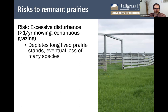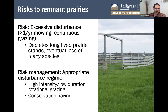Too much disturbance is also a risk. Mowing or haying a prairie more than once a year, or doing continuous grazing, will deplete the stands of long-lived prairie plants, and eventually many or most species will be lost. A lot of cemetery prairies and roadside remnants have been mowed to death, and a lot of pastures that were once prairie have been grazed out. This risk can be avoided by moderating the grazing, haying, or mowing — for example, high-intensity, low-duration rotational grazing and conservation haying are both compatible with biodiversity conservation. The main idea is to limit disturbance to one time per year.